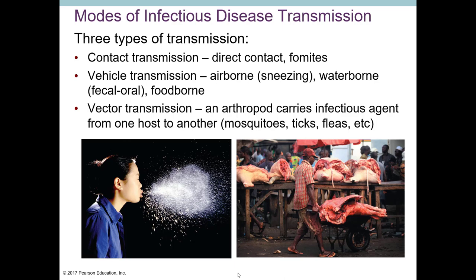It has to get into one of your portals of entry to actually cause infection. Vehicle transmission includes airborne transmission — so if you sneeze into the air and someone breathes it in, as shown in the picture at the bottom left, you can be infected because that takes the pathogen into your mouth or nose, getting it into your portal of entry.